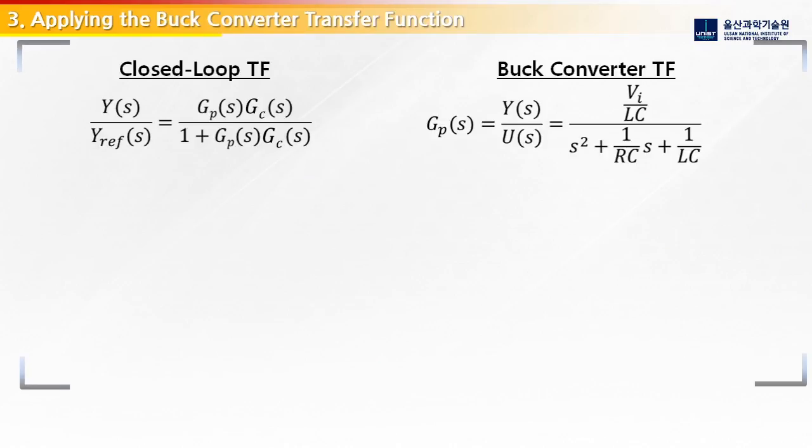So here's our transfer function that we just derived. This is the general equation, so you may have seen it before in studying control systems. Next, we apply the transfer system for the buck converter, which is shown here as Gp. We're going to put this into our closed loop transfer function and see what our system looks like.